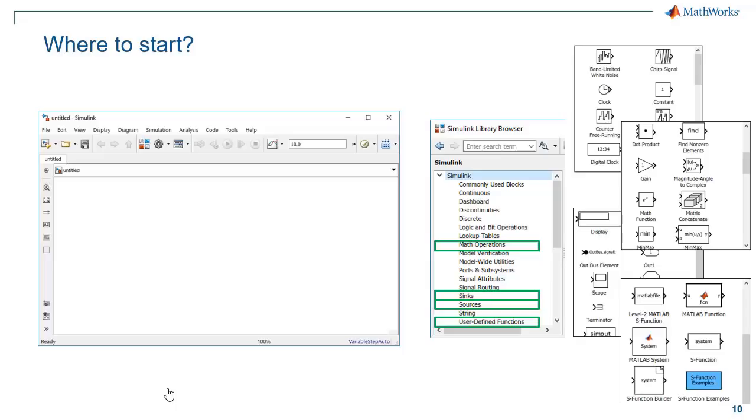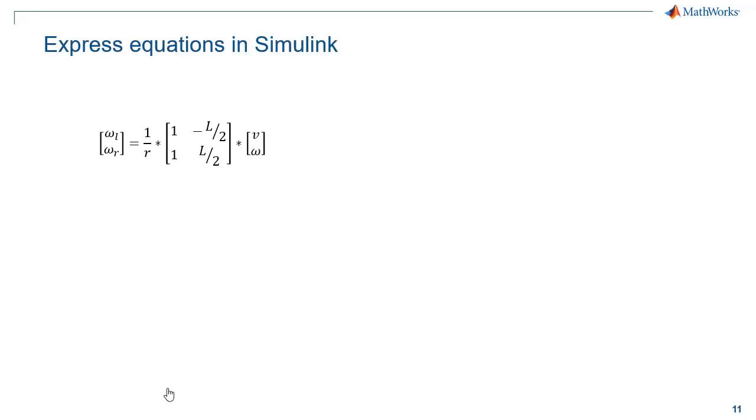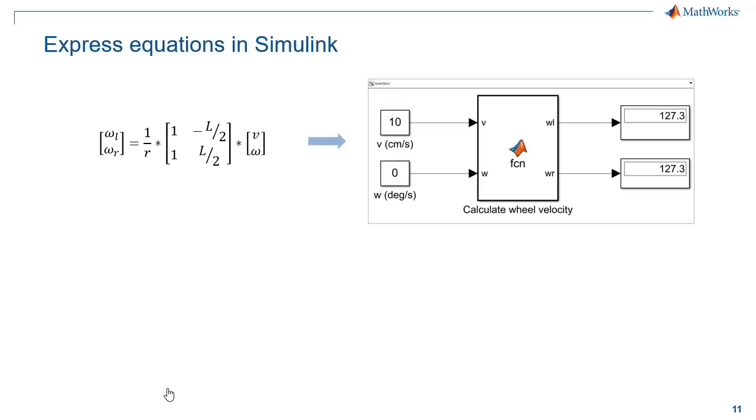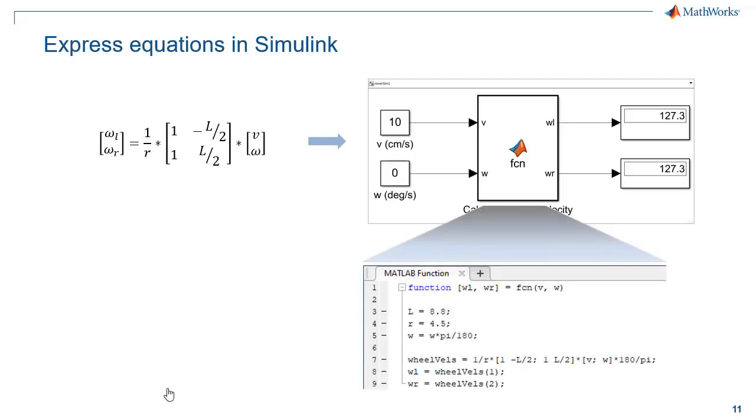As you can see, there's a host of other libraries. There's many more that aren't displayed here, but these are just some of the more popular ones, and you can actually get pretty far using just these basic libraries. So coming back to our earlier equation that relates desired velocity and rate of rotation to wheel velocities, this can be represented in Simulink using the simple model that you see here. So the inputs to the model are rover velocity and rate of rotation, and the outputs are instantaneous wheel speeds to achieve that. So basically this model is telling us that if we want the rover to move forward at 10 centimeters per second without turning, then each wheel should spin at 127.3 degrees per second. And in this case, we actually use a MATLAB function block to express the equation. And that's one very important thing to realize about Simulink, is for those of you that know and love MATLAB, you can plug that code right into your model, which can make the plunge into Simulink much easier.